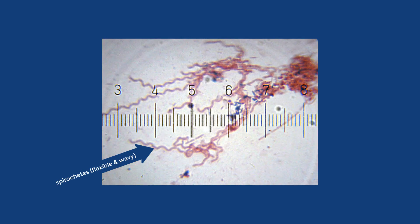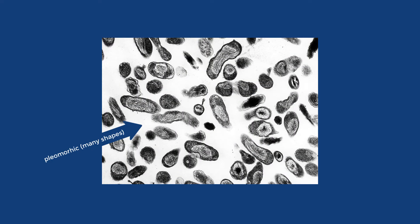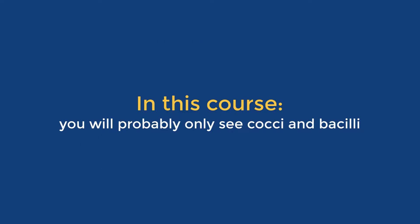There are also vibrios or curved bacteria, spirilla, stiff wavy bacteria, spirochetes, flexible wavy bacteria, and pleomorphic bacteria that can take on multiple shapes. But you're highly unlikely to see those in this course.